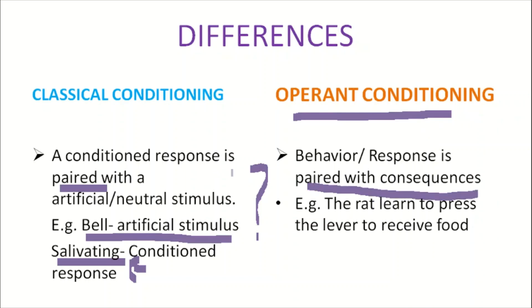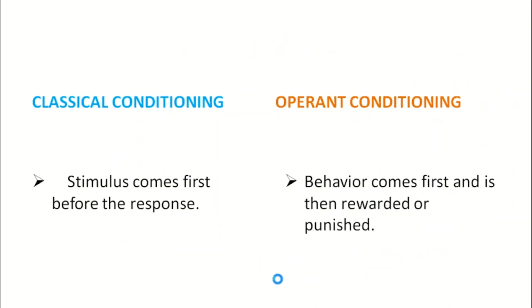Whereas in operant conditioning, behavior or response is paired with consequences. It is not the stimulus but the consequence of the behavior that is more important, unlike in classical conditioning which stresses the importance of stimulus. For example, in Skinner's experiment the hungry rat learned to press a lever to get food.